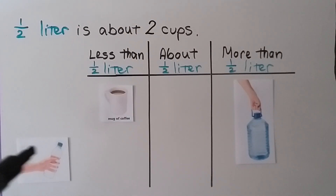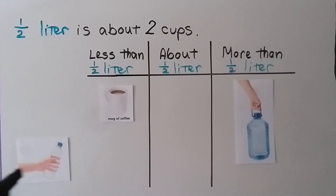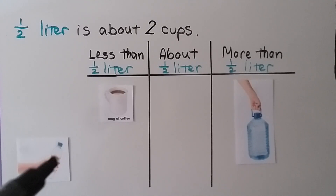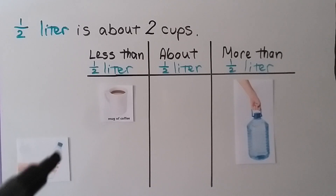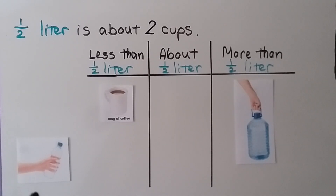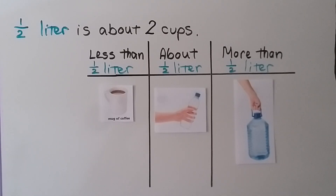Here we have a water bottle, and we can see the size of the water bottle by the man's hand. If that's a grown man's hand, there's probably about two cups of liquid in there. So this would be about half a liter. Remember that a half liter is about two cups in US standard measure.